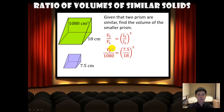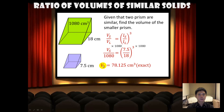Remember, since we are using the ratio of the smaller prism over the larger prism, the length here must also be the smaller length over the larger length. In order to find the volume of the smaller prism, we multiply 1080 on both sides. Finally, the volume of the smaller prism equals 78.125 cubic cm, which is the exact answer.